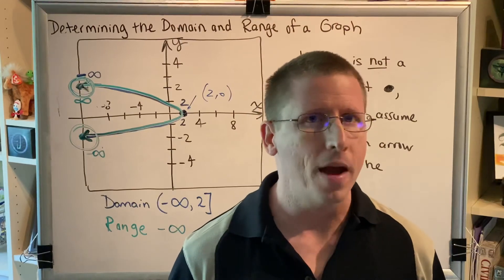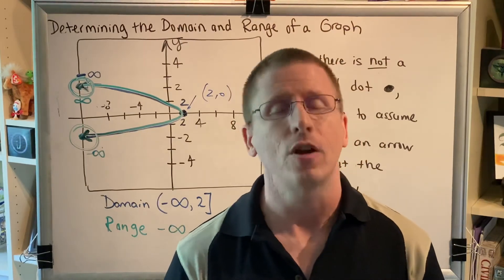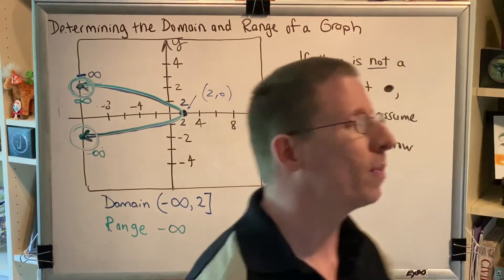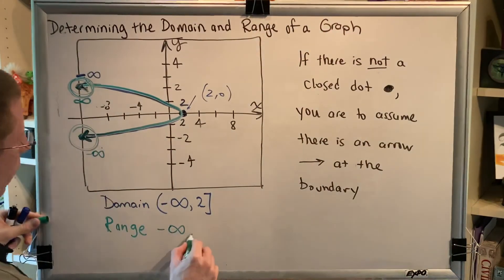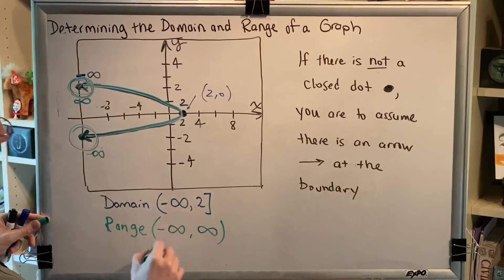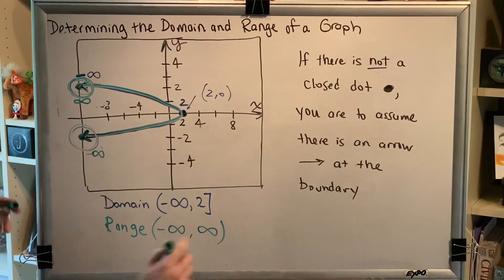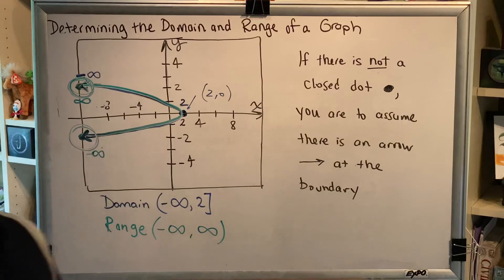Depending on whether you're measuring domain, which is left and right, or range, which is up and down. So this right here represents positive infinity. And since we have all the values in between, the range of this graph goes from negative infinity to positive infinity.